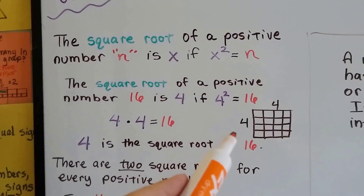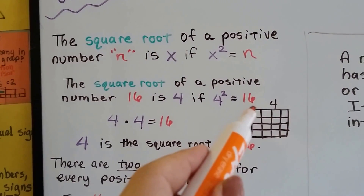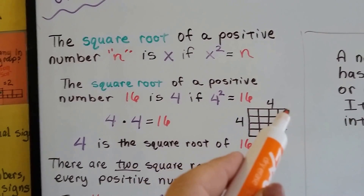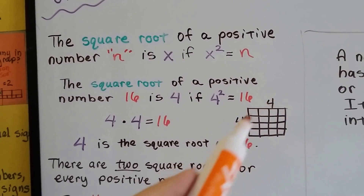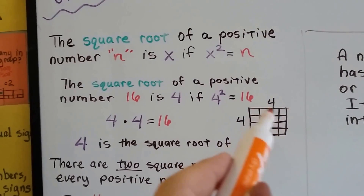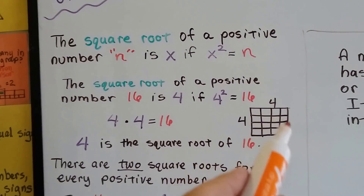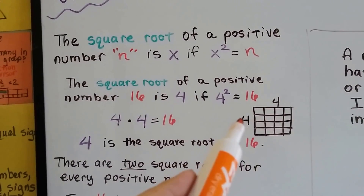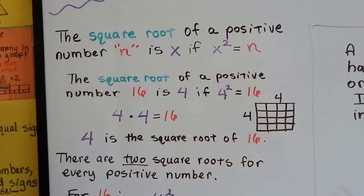Look at it this way. If we had a box, and it was going down 4 this way, and 4 this way, 4 times 4 is 16. See how it makes the square? There's 4 on this side, 4 on this side, and it makes the 16.